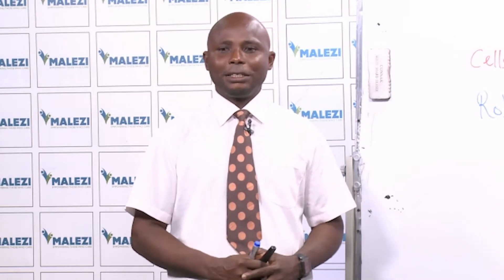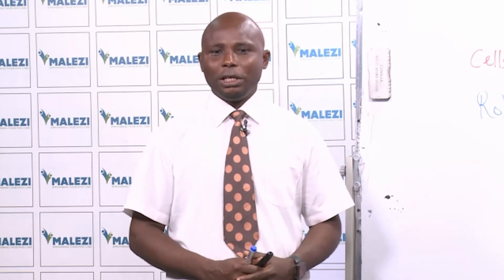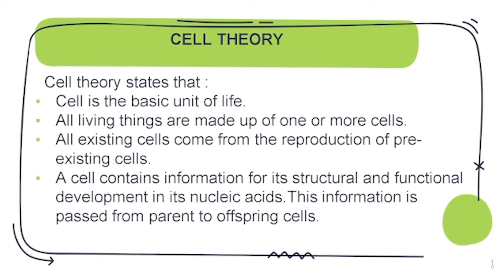When you are asked to state the cell theory, you should know it refers to the ideas of the scientists who worked on cells. The first states: cell is the basic unit of life — the smallest aspect of life that can exist on its own. The second says: all living things are made up of one or more cells. If a living thing is made up of just one cell, it's unicellular; if more than one, it's multicellular.